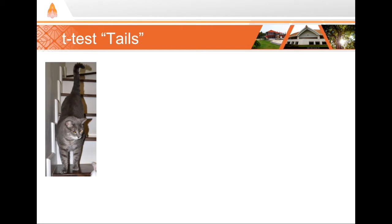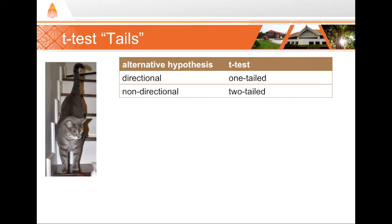So if you make your alternative hypothesis directional, then you would use a one-tailed t-test. If your alternative hypothesis, on the other hand, is non-directional, then you would want to use the two-tailed t-test. I can give you an example.